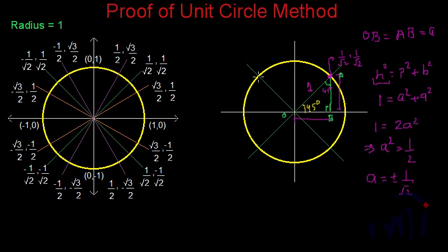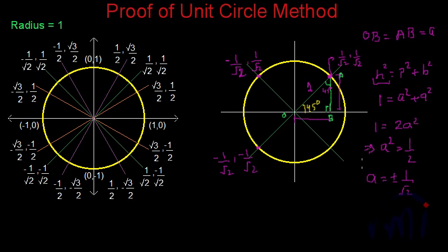This other point also has coordinates 1/√2 and 1/√2, but the x-coordinate in the second quadrant is negative. So cos 135 (which is 90 + 45) is −1/√2 and sin 135 is +1/√2. Reflecting these values over into the third quadrant gives −1/√2 and −1/√2. And the coordinate in the fourth quadrant will be +1/√2 for x and −1/√2 for y. That is how you get all these values.